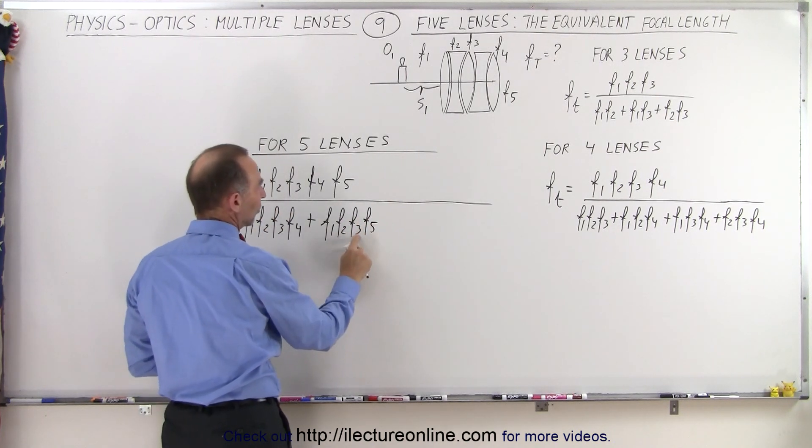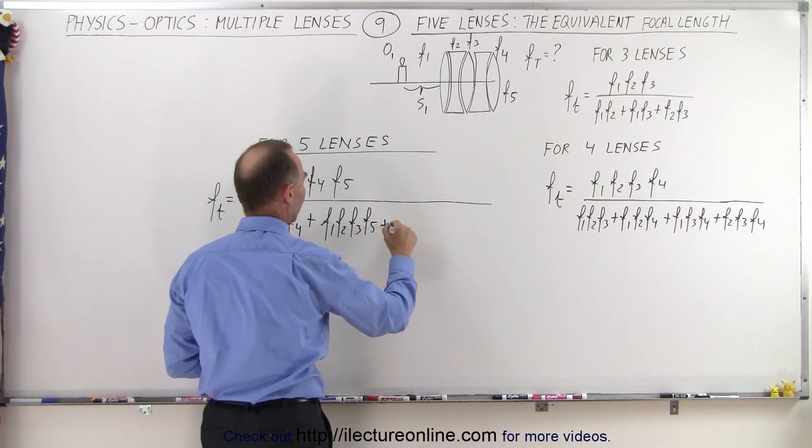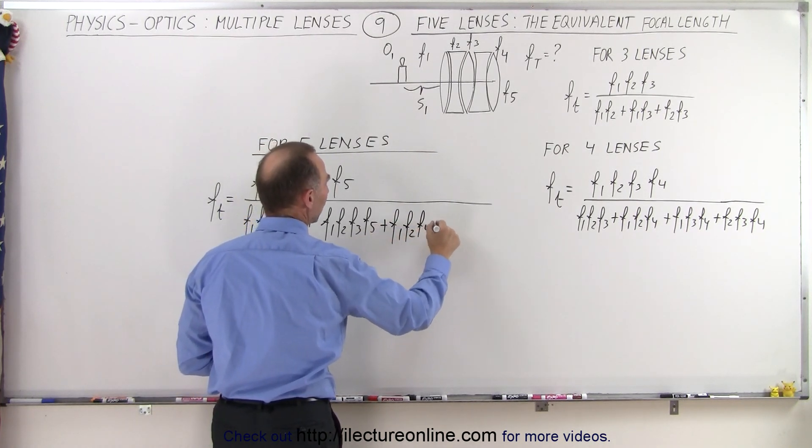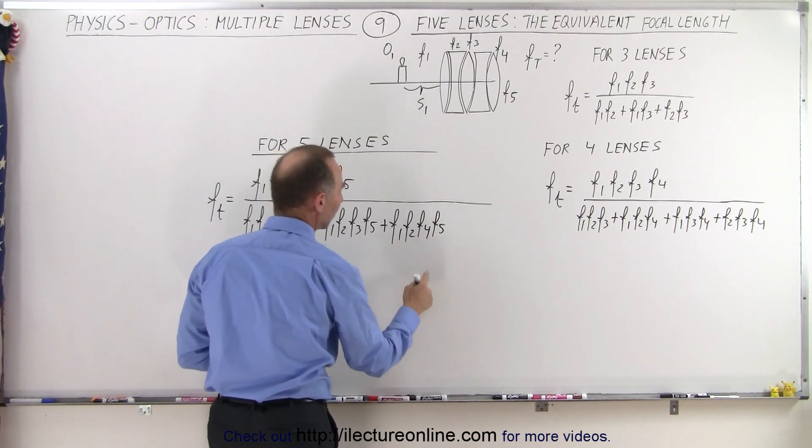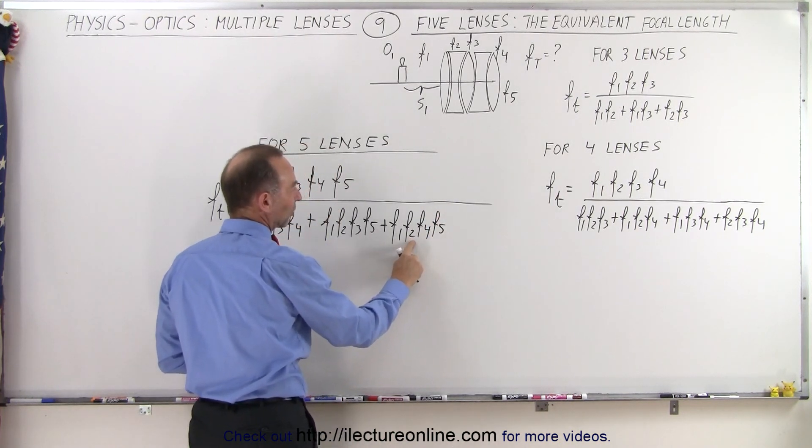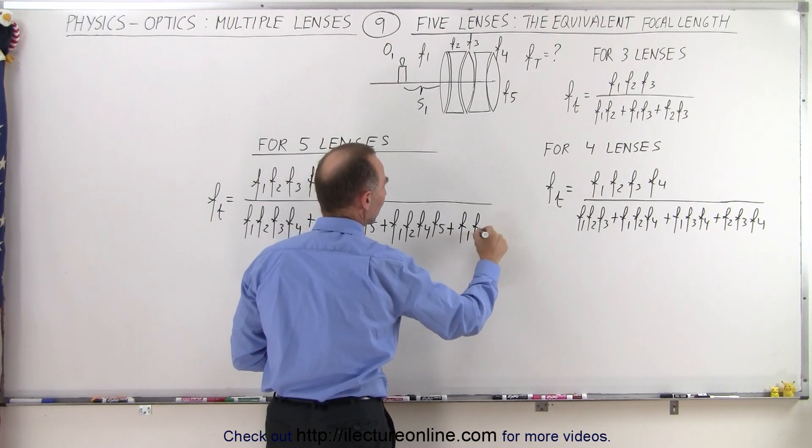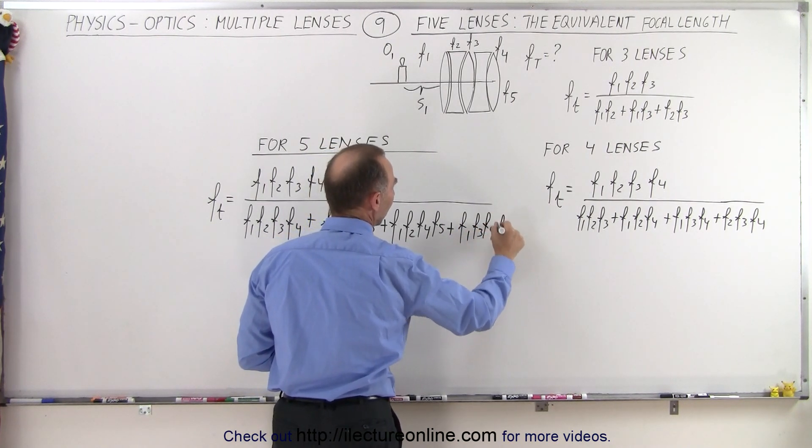Then instead of the three, we're going to write this as a four. So now we have plus F1, F2, F4, and F5. And then instead of writing this as a two, we're going to write this as a three. So plus F1, F3, F4, and F5.